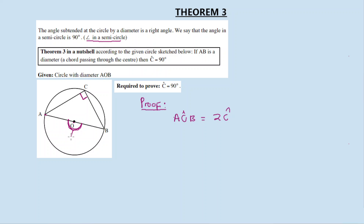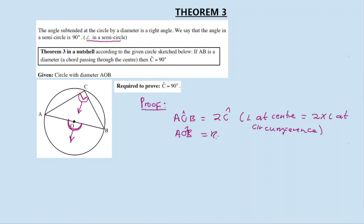AOB is equal to two times angle C. This angle is 180 degrees — 180 degrees is the angle at the center facing in that direction, and angle C is facing in that direction. So applying Theorem 2: angle at center equals two times angle at circumference. Therefore AOB equals 180 degrees, because it's a straight line. Substituting: 180 = 2 × angle C. Divide both sides by 2, and angle C equals 90 degrees. Proven.